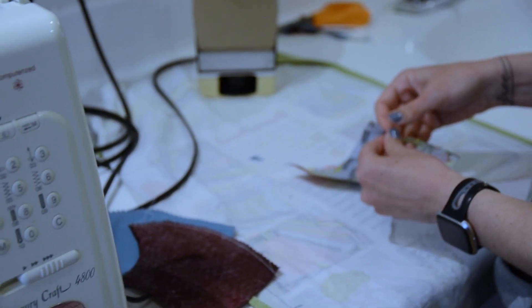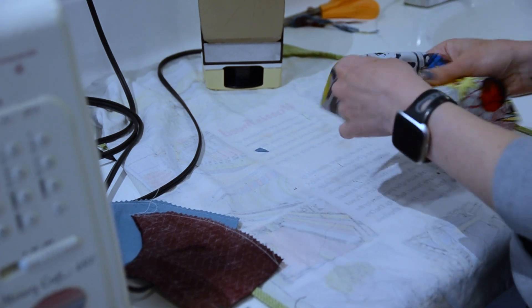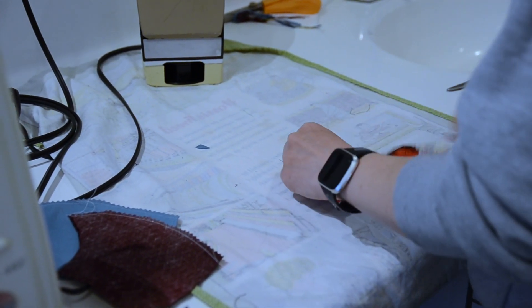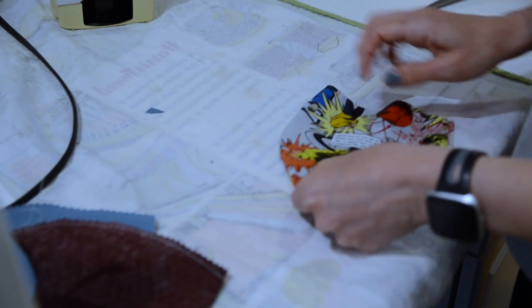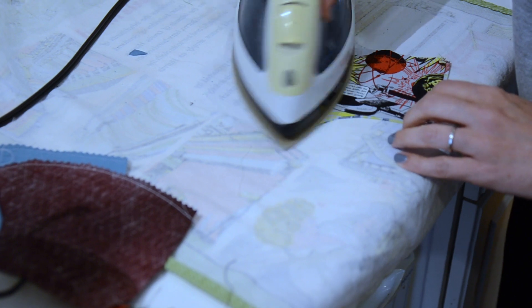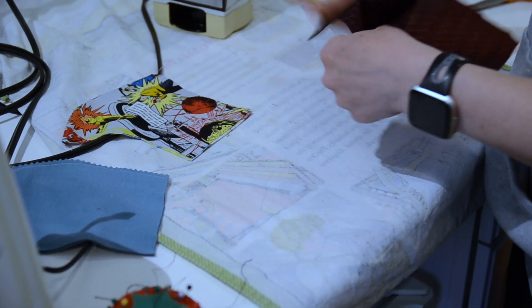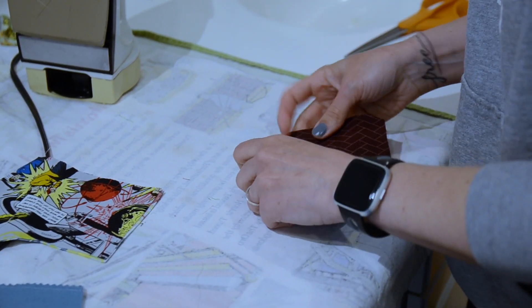Now we're going to press these seams open. I'm going to flip these around to line them up. You only need to do this for the inside lining and the outside material. The jersey does not need to be pressed.